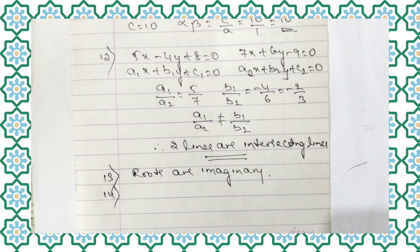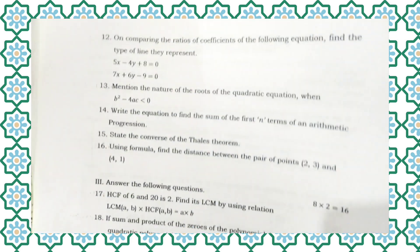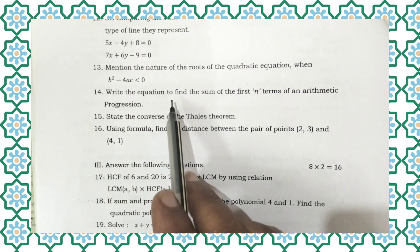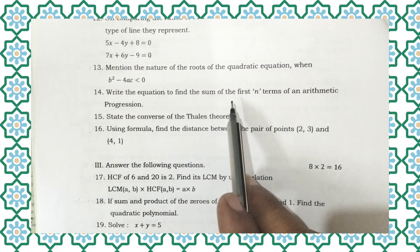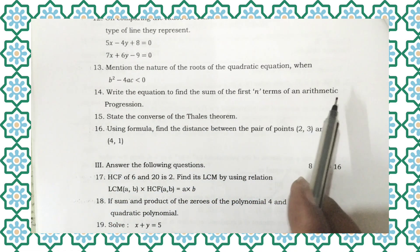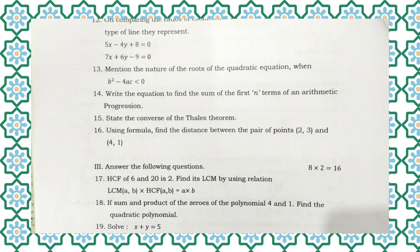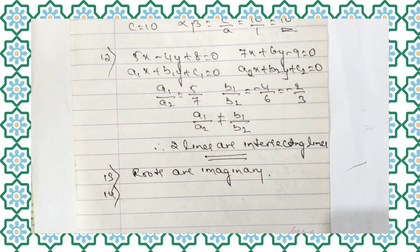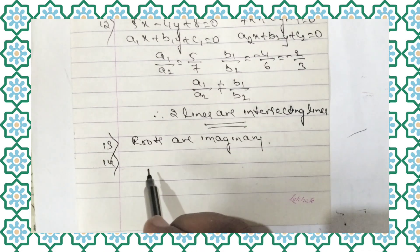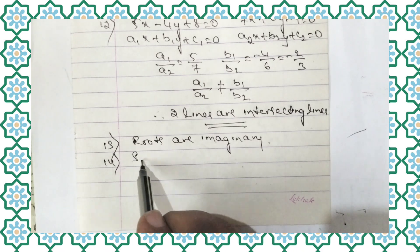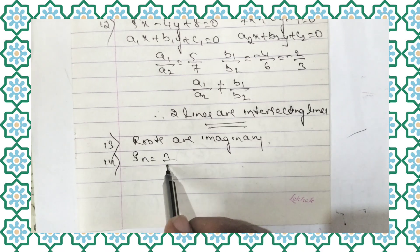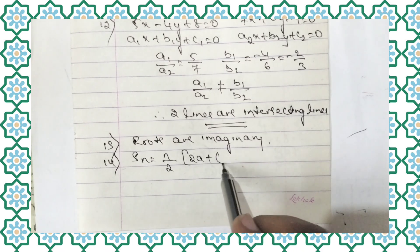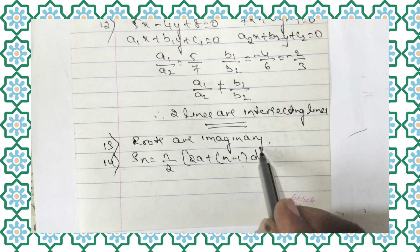Next, question number 14: Write the equation to find the sum of the first n terms of an arithmetic progression. The formula is: Sn equals n by 2 into (2a plus (n minus 1) into d).